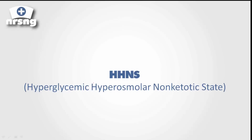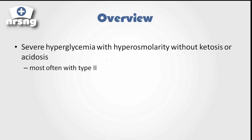HHNS is very different from DKA in both its onset, its treatment, and kind of what's actually occurring. It's important to understand that these are two very different conditions, but they're both associated complications of diabetes. What's really helpful about HHNS is it actually tells us everything that's going on: hyperglycemic, hyperosmolar, non-ketotic state. So this is very severe hyperglycemia with hyperosmolarity without ketosis or acidosis.